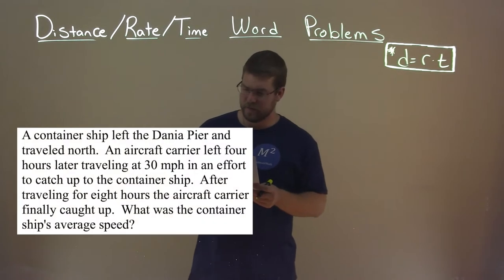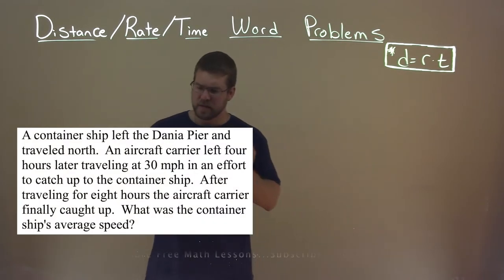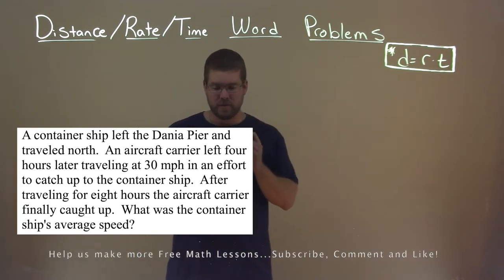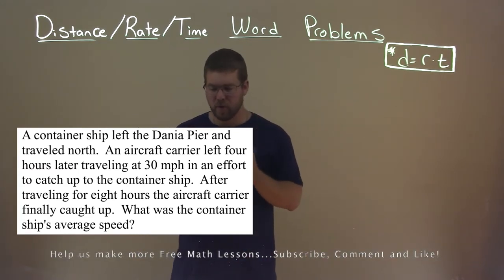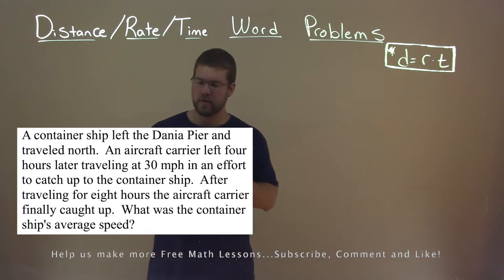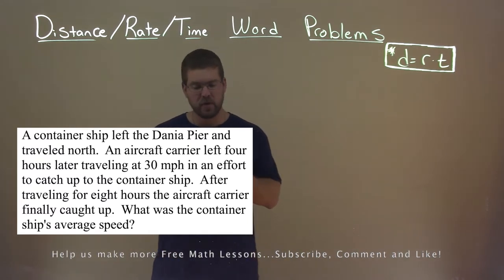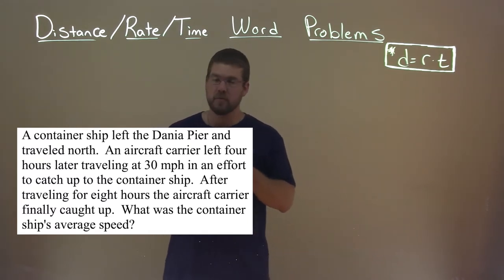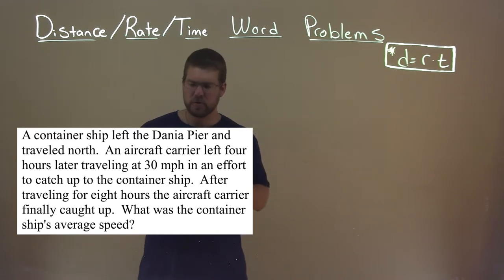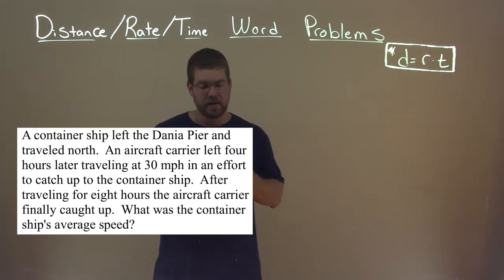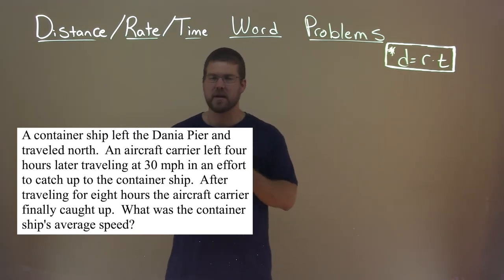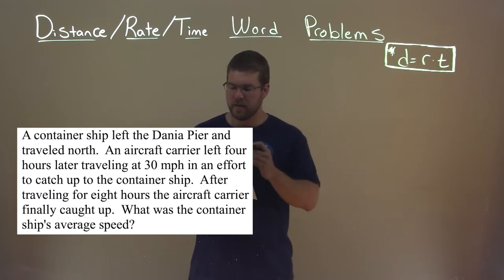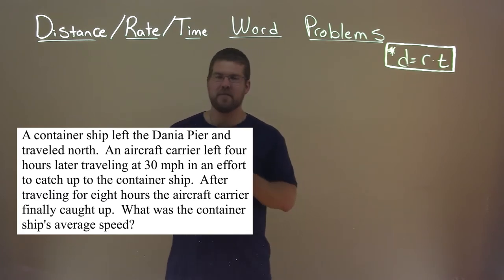We're given this problem right here. A container ship left the Dania Pier and traveled north. An aircraft carrier left four hours later traveling at 30 miles per hour in an effort to catch up to the container ship. After traveling for eight hours, the aircraft carrier finally caught up. What was the container ship's average speed?